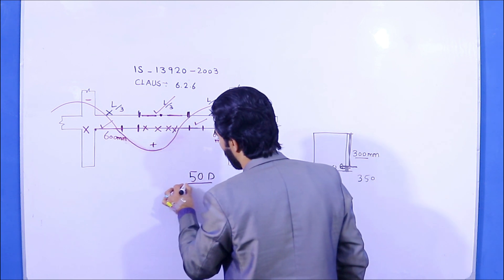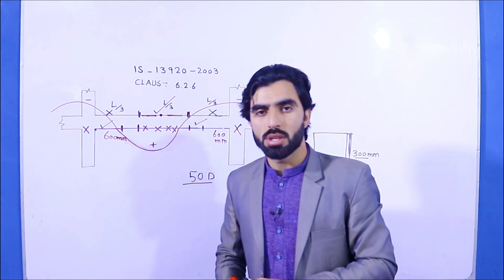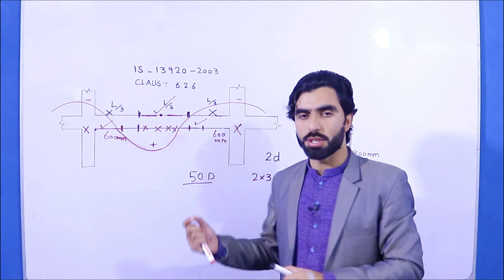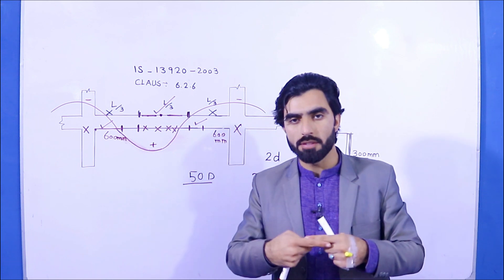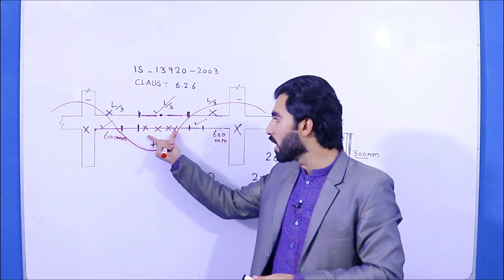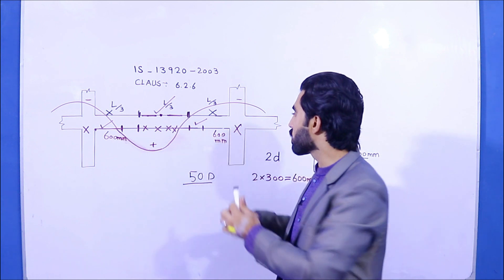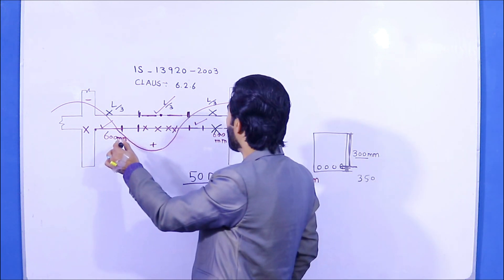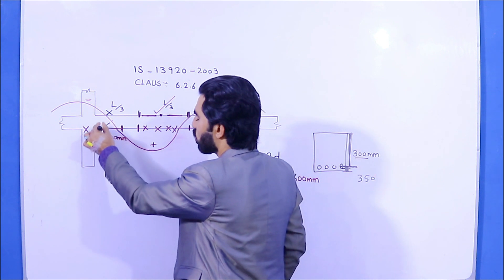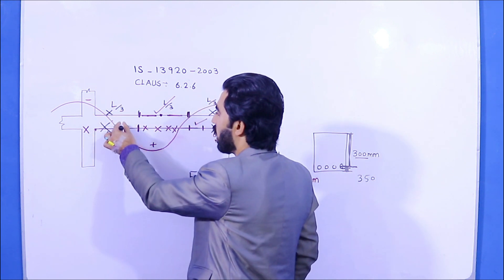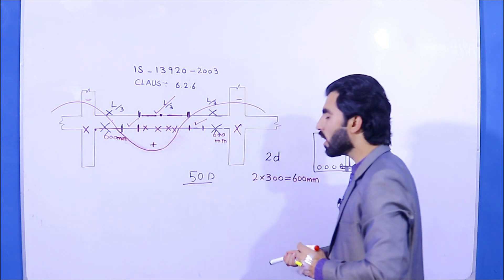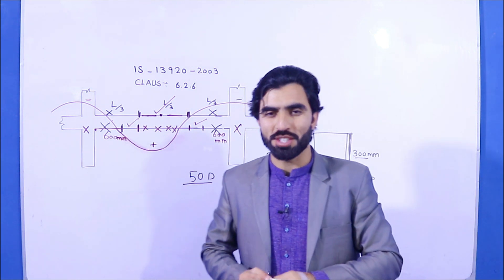Regarding the length of lapping length: for tension zones, especially for beams, the lapping length should not be less than 50d, where d is the diameter of the steel rod. You can go up to 60d but do not exceed it. I recommend 50d as the best lapping length. After L/4 or after the 2d formula distance, you can provide lapping length in the valid zone.